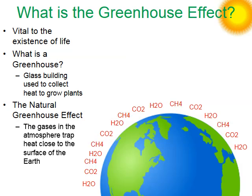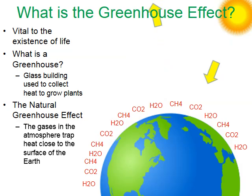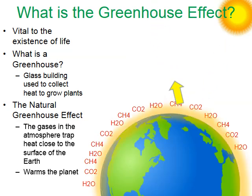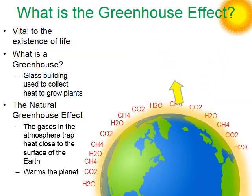In my animation, light from the Sun will reflect off the surface of the Earth. As that happens, these greenhouse gases will absorb heat near the surface of the Earth to warm the planet, keeping Earth nice and comfortably warm.